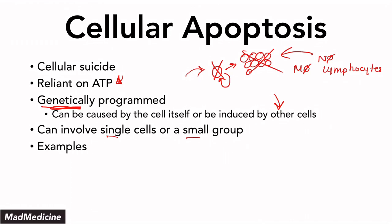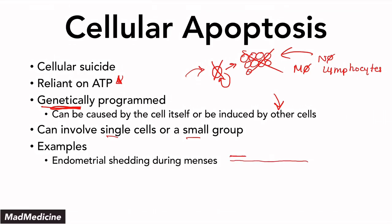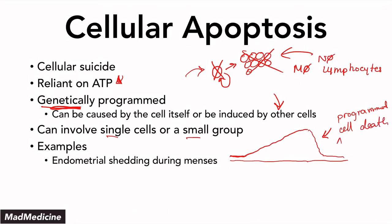A hallmark example of cellular apoptosis is endometrial shedding during menses. During the menstrual cycle, the endometrium grows and grows, and if no fertilized egg has been implanted, shedding occurs — because the cells of the endometrium are programmed to die if they do not receive continuous progesterone. This is all programmed cell death, also known as apoptosis.